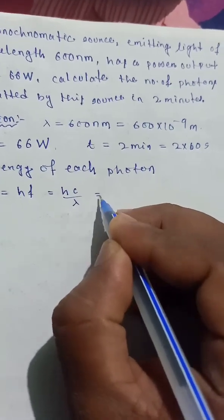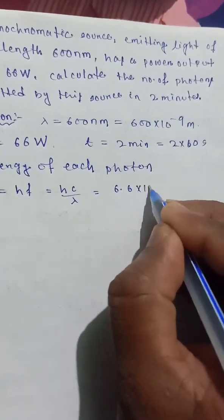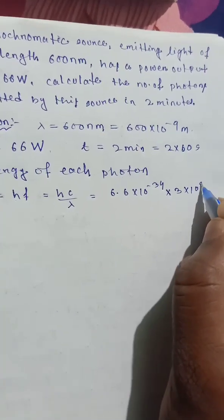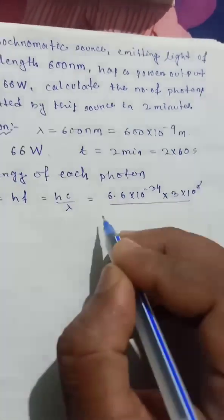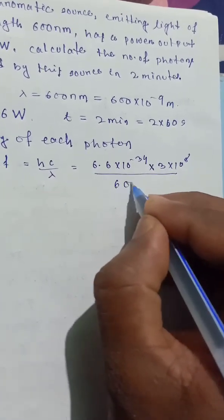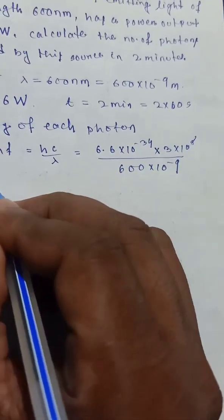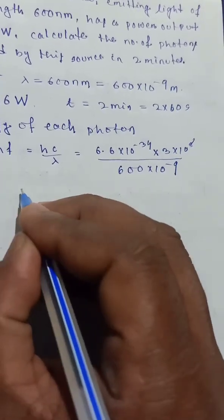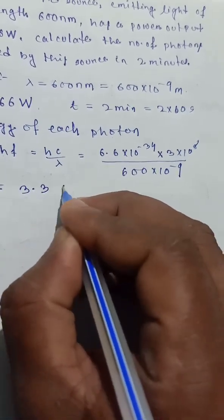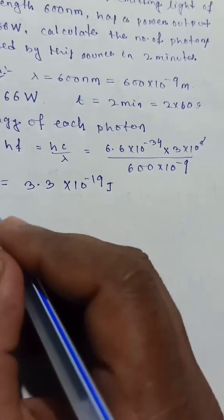Planck's constant h is 6.6 into 10 to the power minus 34, c is 3 into 10 to the power 8, divided by wavelength 600 into 10 to the power minus 9. Calculating this, we get the energy of one photon equal to 3.3 into 10 to the power minus 19 joules.